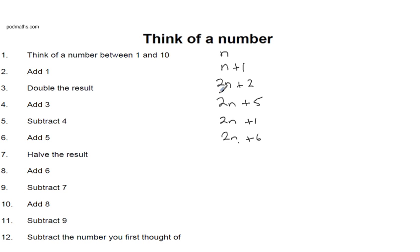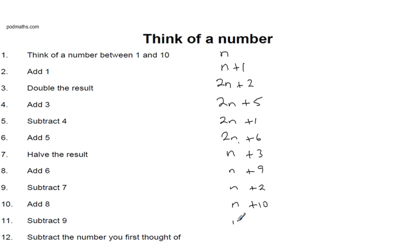Now half the result — very similar to when we doubled it. You've got to halve each individual expression: half of 2N gives N, half of 6 gives 3. After that it becomes quite straightforward. Add 6: 3 plus 6 is 9, giving N plus 9. Subtract 7: N plus 9 minus 7 gives N plus 2. Add 8: N plus 2, add 8 gives N plus 10. Subtract 9: 10 take away 9 gives N plus 1. And the final step: N plus 1, take away the number I first thought of — represented by N. N take away N leaves nothing, and the 1 is all that's left from that expression.